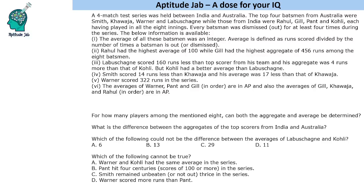In every match there are 2 innings, so a total of 8 innings. Every batsman was dismissed or out for at least 4 times during the series. Average is defined as runs scored divided by the number of times a batsman is out or dismissed. For example, if a person scores 360 runs and is out all 8 times, average is 45; out 6 times gives 60; out 4 times gives 90; out 5 times gives 72.